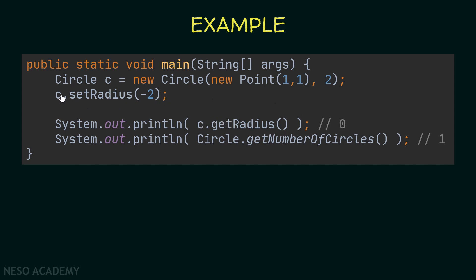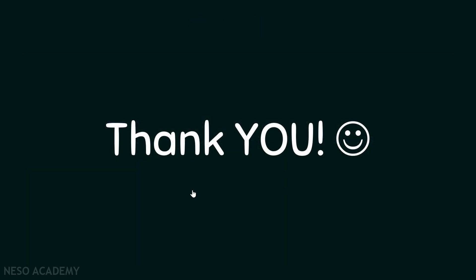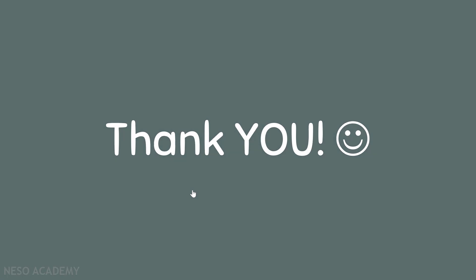After that, printing c.getRadius() will print 0, because we passed a negative value to setRadius. Then, calling Circle.getNumberOfCircles() prints 1, because at that point we only created one circle object. Thanks for watching and I'll see you in the next video.